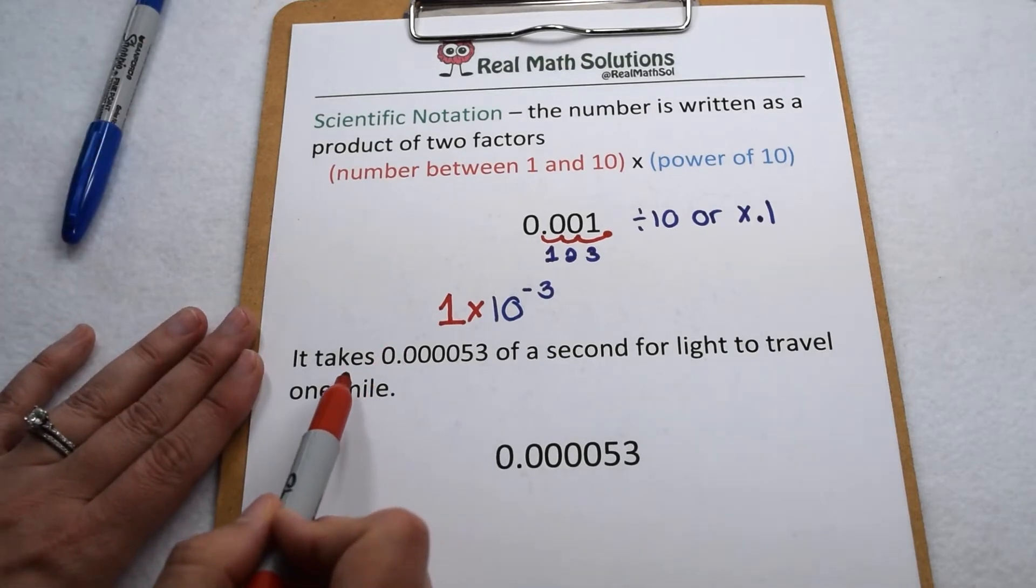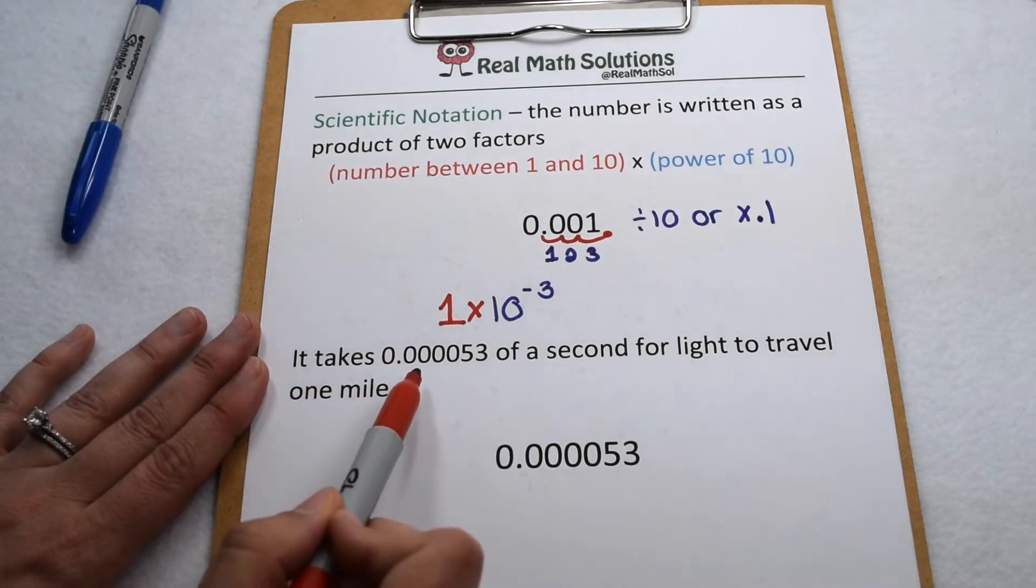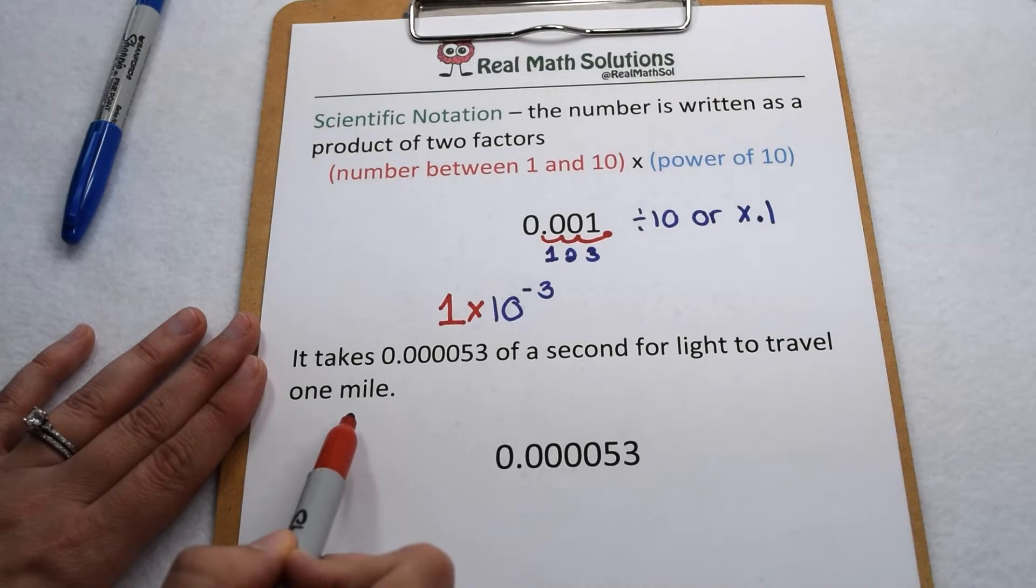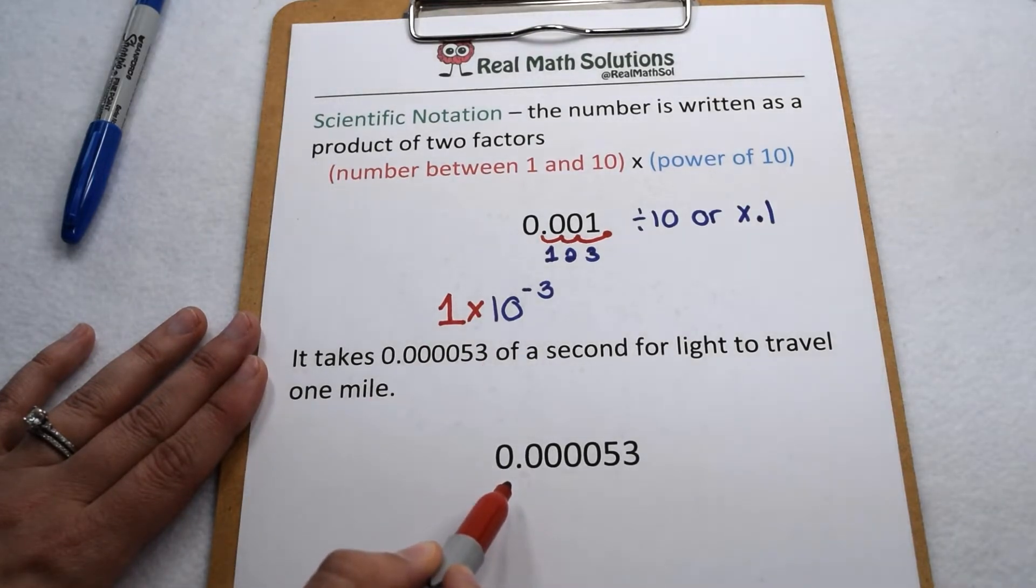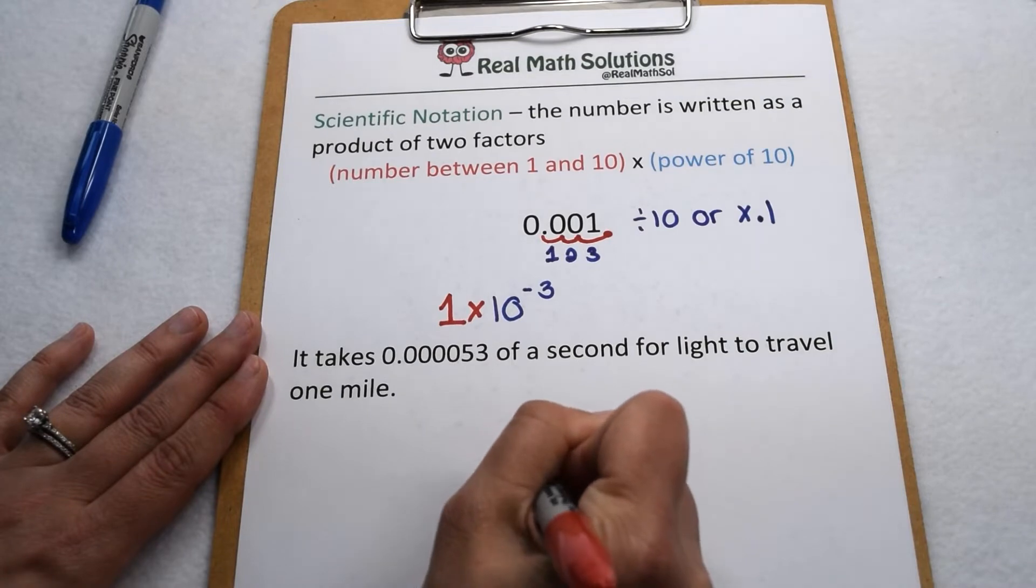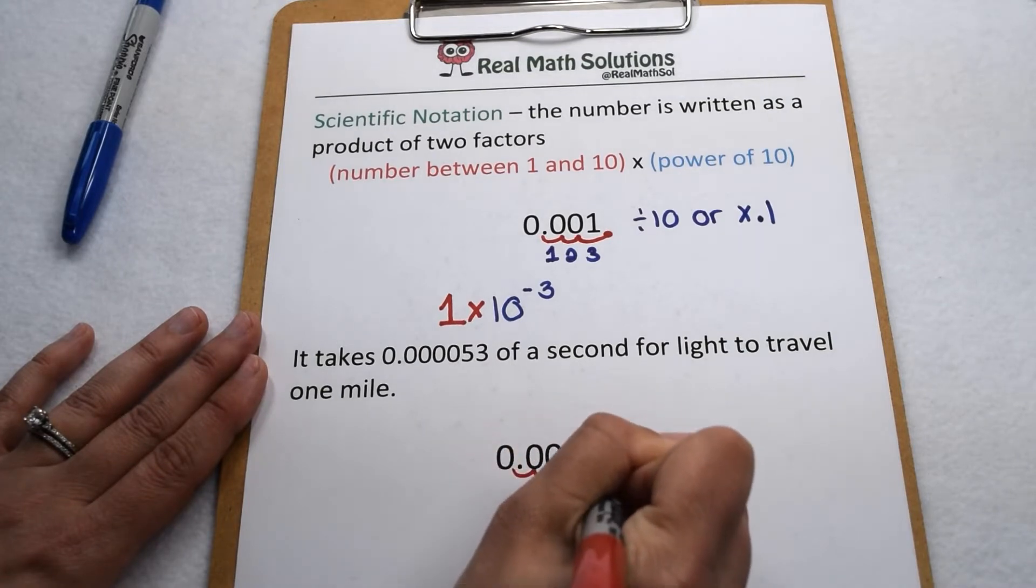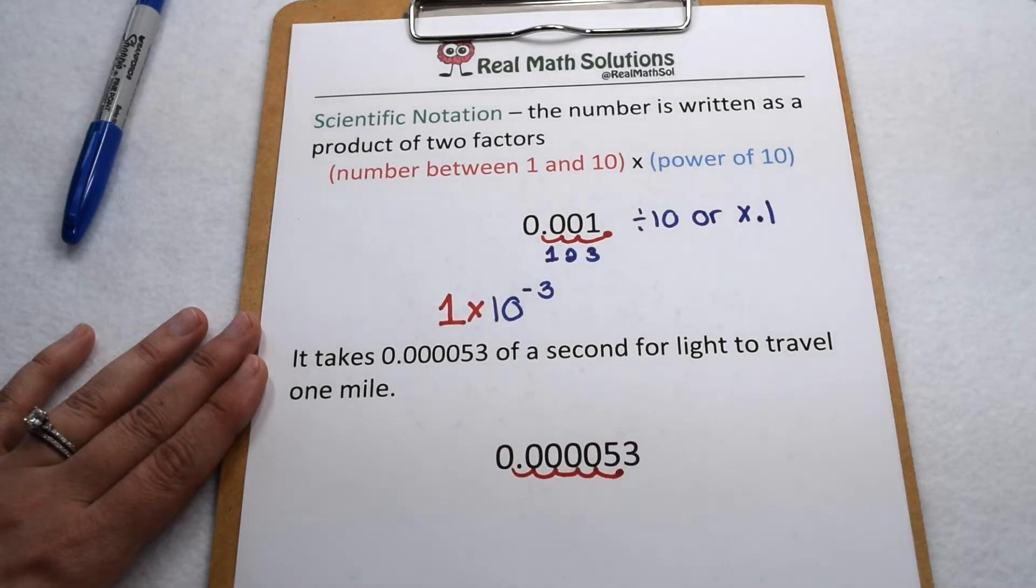Let's try and look at another example. Here it says it takes 0.000053 of a second for light to travel one mile. Let's work on writing 53 millionths in scientific notation. The first thing we're going to do is move our decimal back until we have a value between 1 and 10.